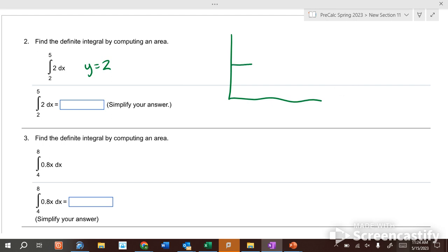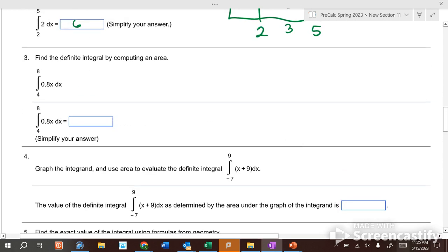It's a horizontal line two above the axis, and we're going from two to five. What's the area under the curve from two to five? And this is y equals two. Well, this is a rectangle with a height of two and a width of three, so the answer is six. Easy peasy lemon squeezy, right?